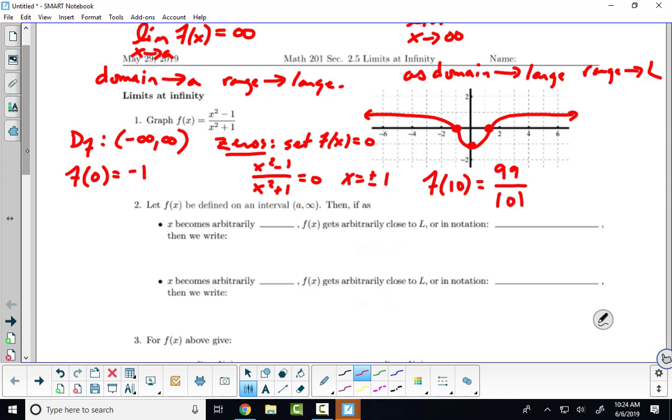So the graph of this function looks something like this. What I want to talk about now is what we call the long-term behavior of the graph. Meaning, away from 0, how is this function behaving? Remember, in previous classes, we'd say that this has a horizontal asymptote at y equals 1. We want to somehow encapsulate that with limits. We want to use limits to describe this idea.